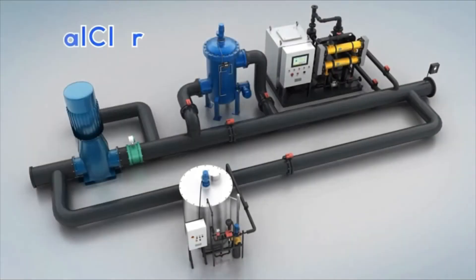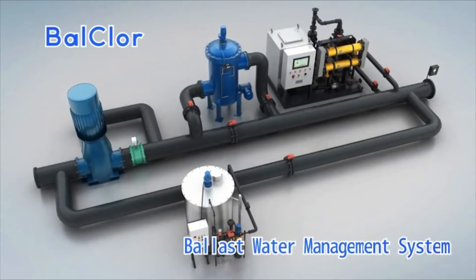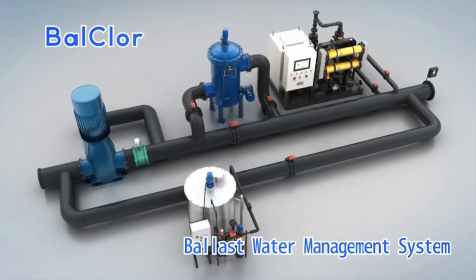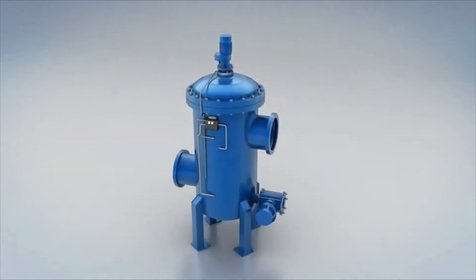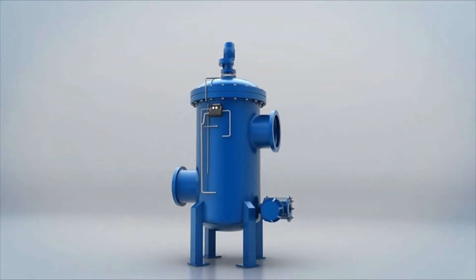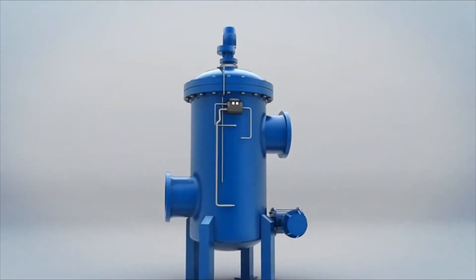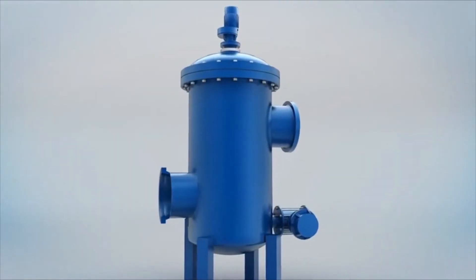There are three major components in Ball Chlor Ballast Water Management System: Filtration Unit, Electrolysis Unit and Neutralization Unit. During ballasting process, ballast water should flow through an automatic back flusher filter firstly after ballast pump. During filtration,